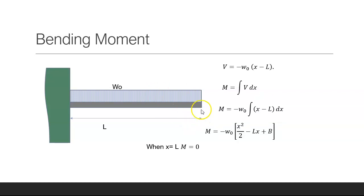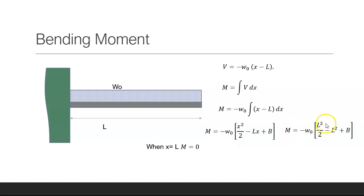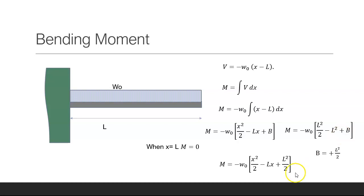I know that out at x equal to L the moment is equal to zero. So zero equals half L squared minus L squared plus B, which means B must equal plus L squared over 2. Substituting that back gives the equation for the bending moment at any distance x along the beam.